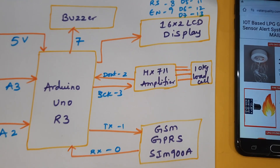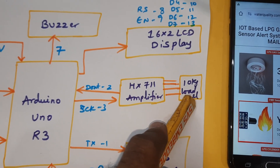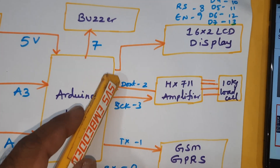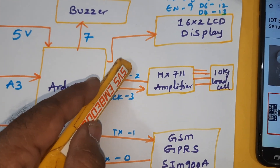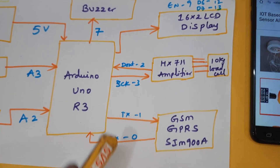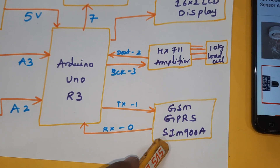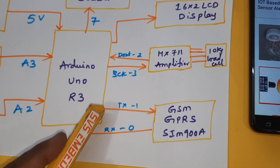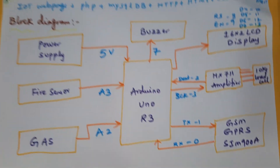The HX711 amplifier and 10 kg load cell are connected using the I2C protocol — DOUT and CLK connected to GPIO pins 2 and 3. The GSM SIM900A module handles SMS alert, email alert, and sending data to the server. It is connected via TX and RX on pins 0 and 1.